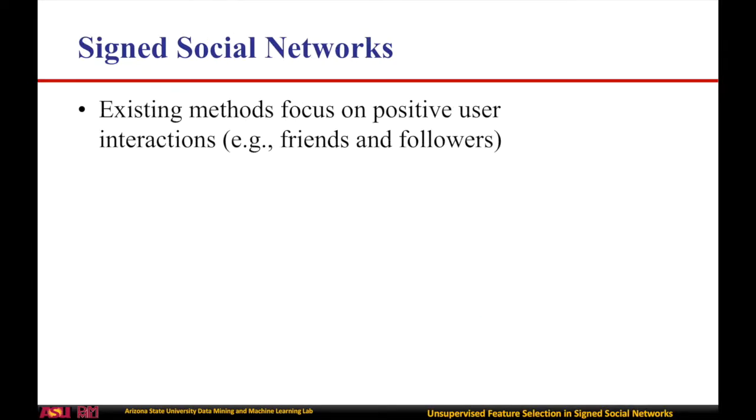Some of the existing efforts on feature selection for network data overwhelmingly focus on positive user interactions such as friendships and user-following relations. They make use of the positive links to guide feature selection in the content space.